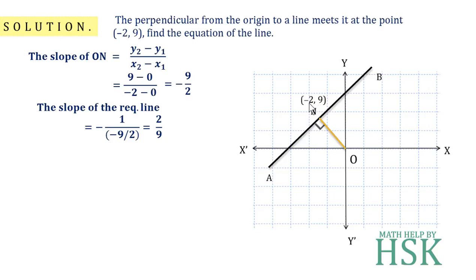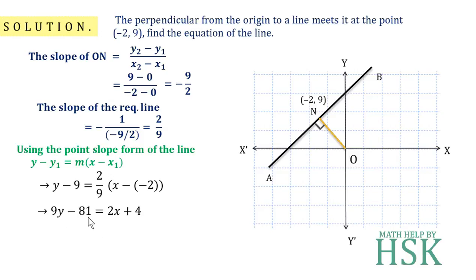y minus y1 is equal to m times x minus x1. I get the equation of line as y minus 9 is equal to 2 upon 9 into x minus of -2. This on simplification, that is